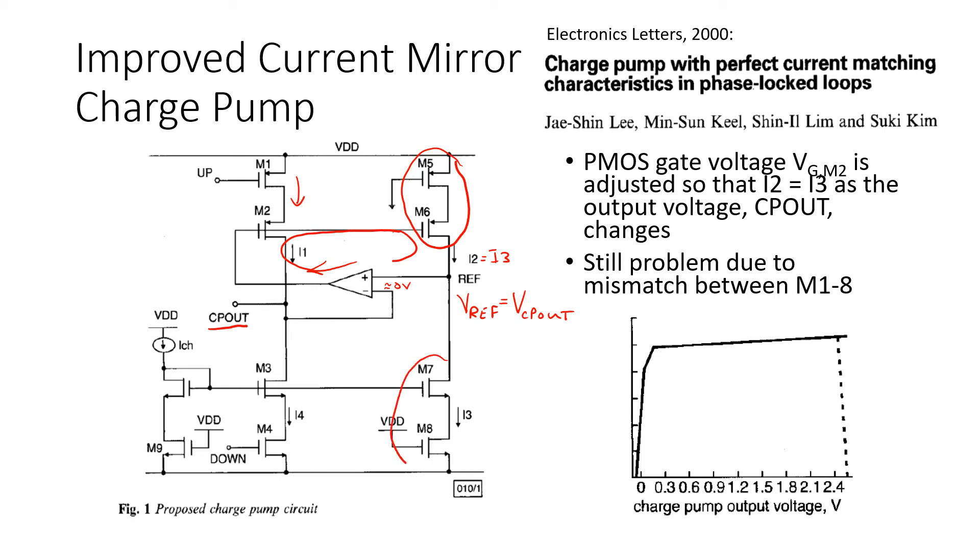Similarly, M7 and M8 are a replica current source that replicates the pull-down current that flows in M3 and M4. So that's why I call this a replica biasing technique. And essentially it ensures that the pull-up and pull-down currents remain the same regardless of the voltage of Vref and hence regardless of the voltage of CP out.